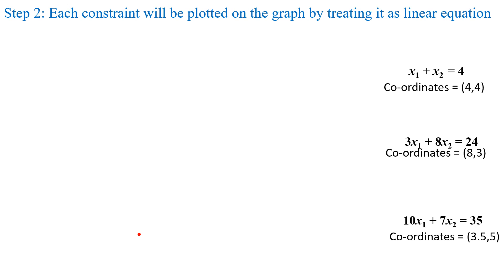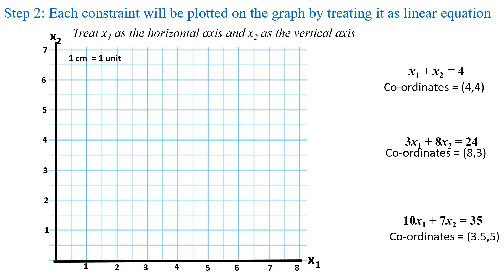Each constraint will be plotted on the graph by treating it as a linear equation, with x1 as the horizontal axis and x2 as the vertical axis. We draw the horizontal and vertical axes on the graph sheet, considering 1 cm equal to 1 unit. Then locate the coordinates of each constraint and join them by a line. For the first constraint x1 plus x2 equal to 4 with coordinates (4, 4): mark 4 on the x1 axis and 4 on the x2 axis, then join these two points by a line.